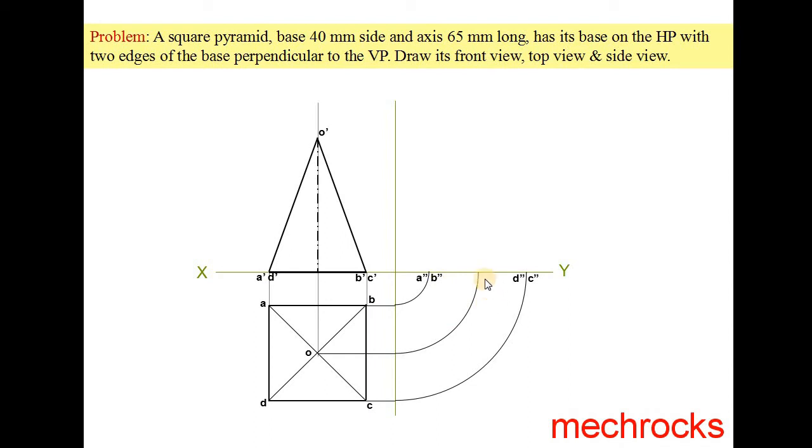Now you draw the axis line like this. From O dash you draw a horizontal line and this point as the O double dash. Now join the O double dash, A double dash and O double dash, D double dash, and this line also. This is side view. Like this you can draw the front view, top view and side view.